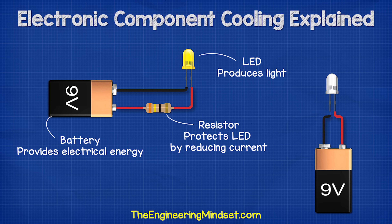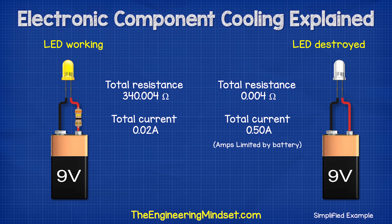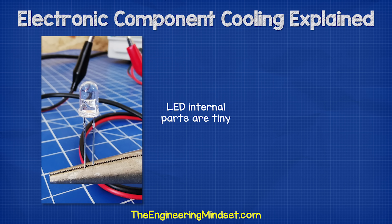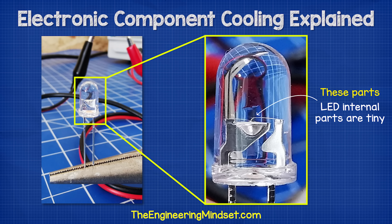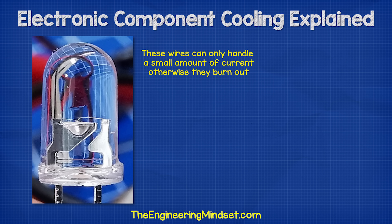If we remove the resistor, the LED will instantly burn out. So why does the LED burn out? Because the resistance of the circuit is reduced, meaning it becomes much easier for more electrons to flow from the battery and through the LED component. The internal components of the LED are tiny — these parts which you can only see with a very good lens. These parts can only cope with a certain amount of electrons flowing through them, otherwise they will just burn out.